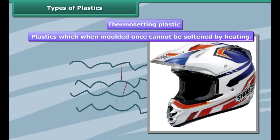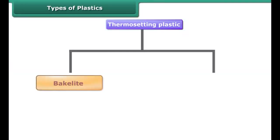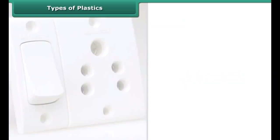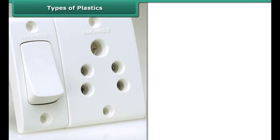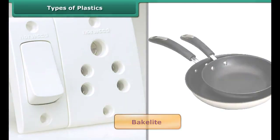Thermosetting plastics have a cross-linked arrangement of their constituent units. These can be melted and take shape once only. After they have solidified, they stay solid. On subsequent heating, they do not become soft and hence do not change their shape. Therefore, these cannot be recycled.